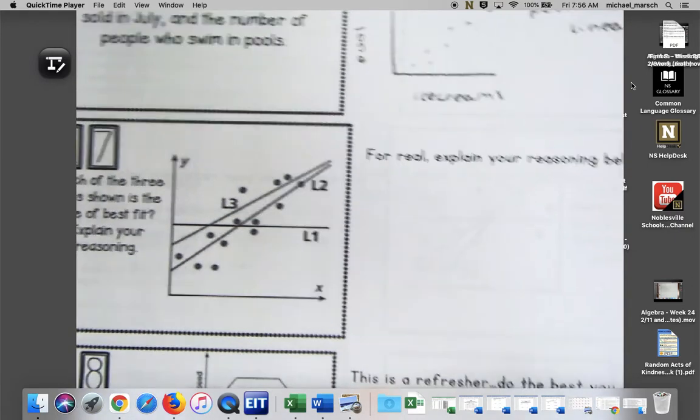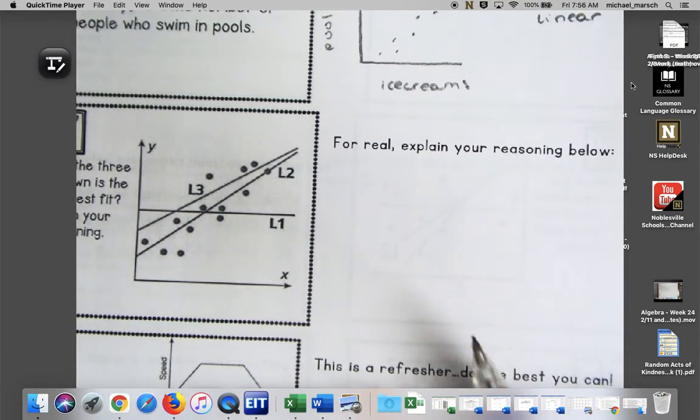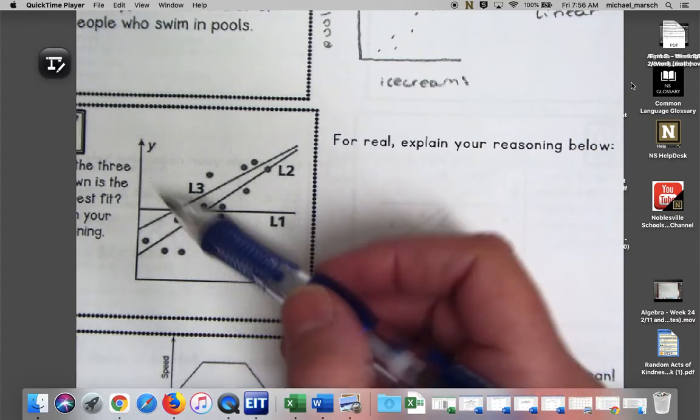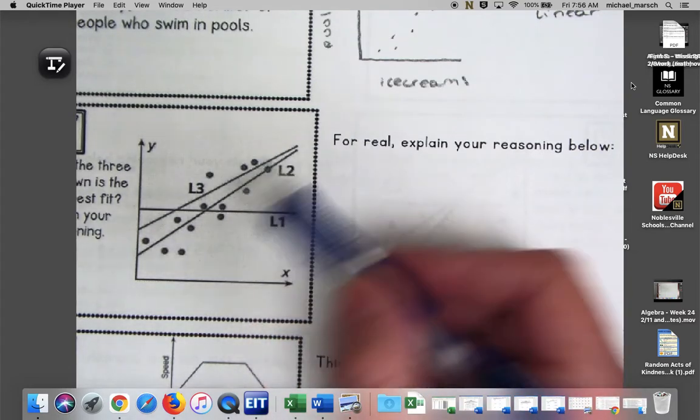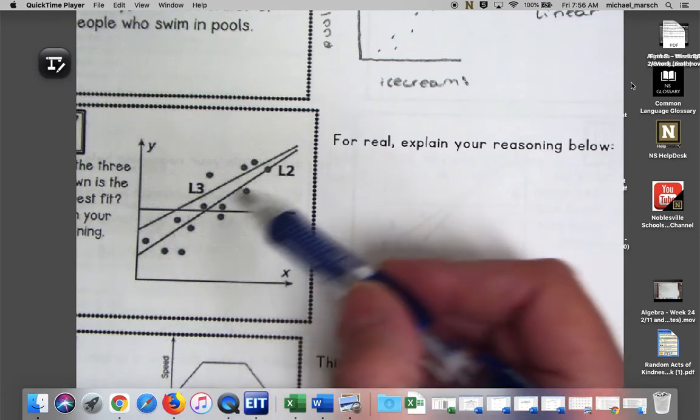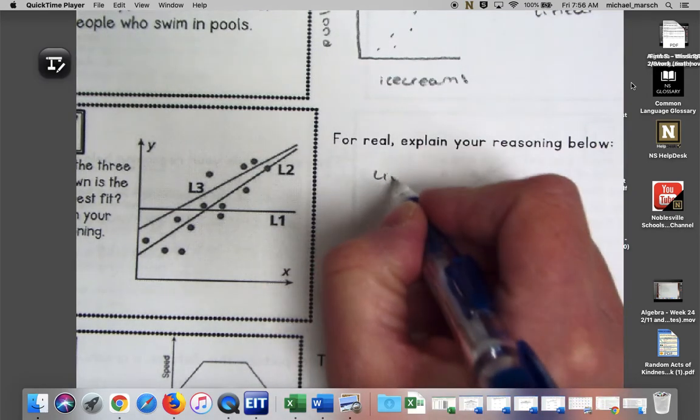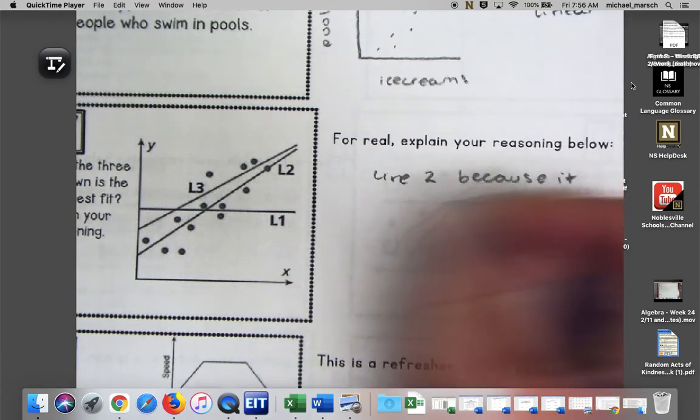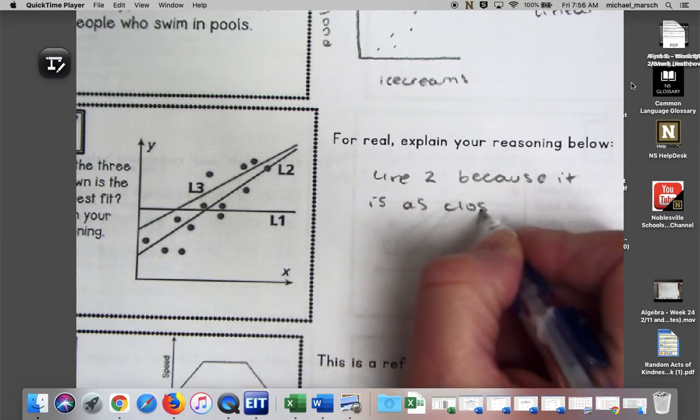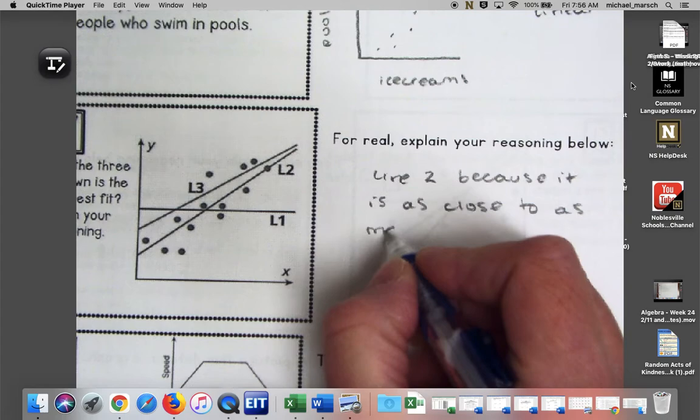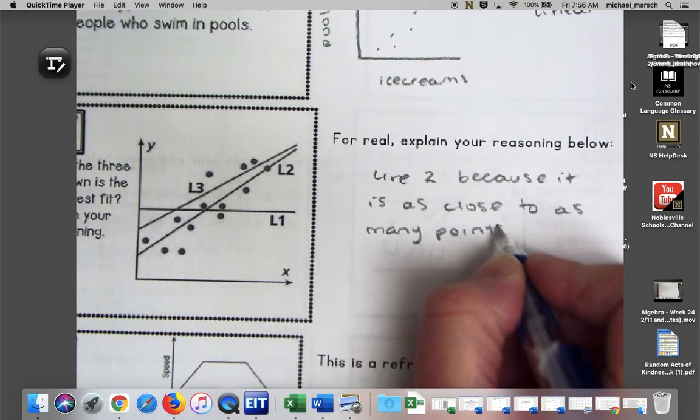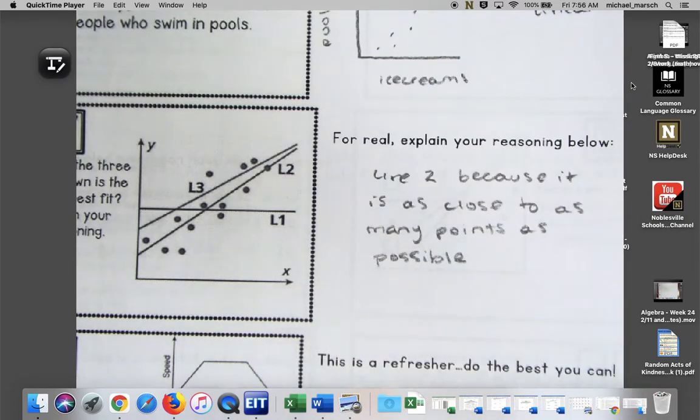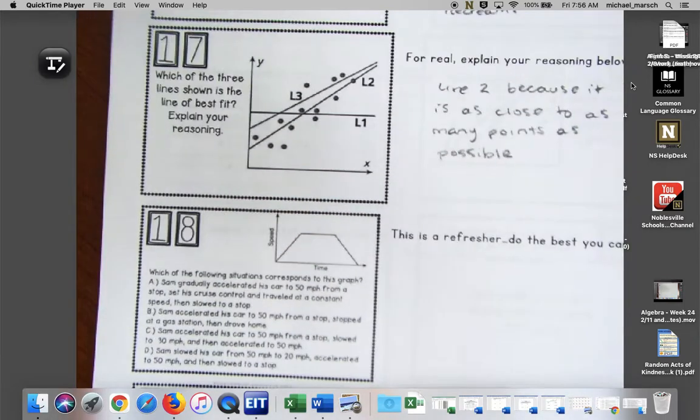Number 17, which of the three lines shown is the line of best fit? Explain your reasoning. For real, explain your reasoning. We know it's not one, that's terrible, that's just a horizontal line. Line three seems like it's really close up here to the top. We're going to go line two being the one that's the closest, and then we would say because it is as close to as many points as possible, because that is our goal after all.